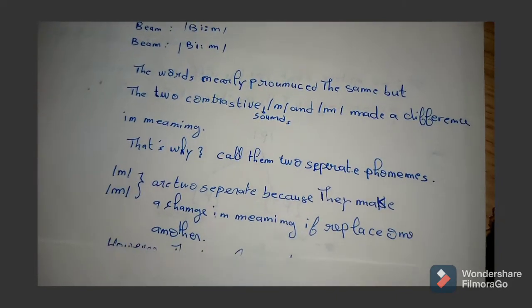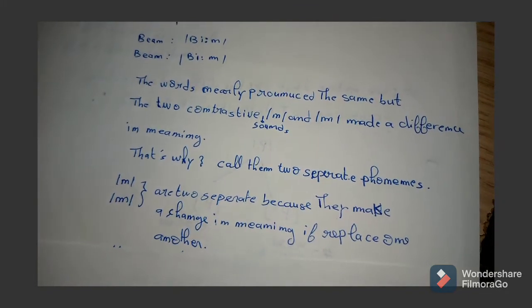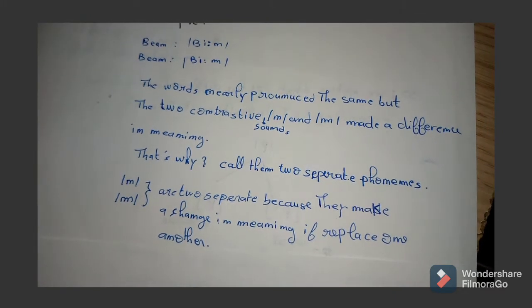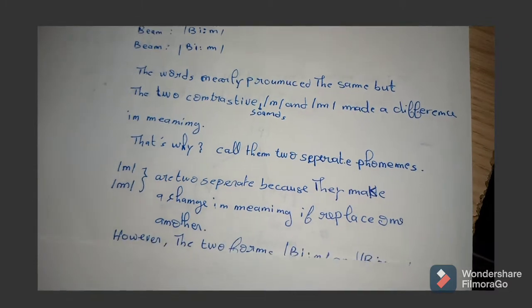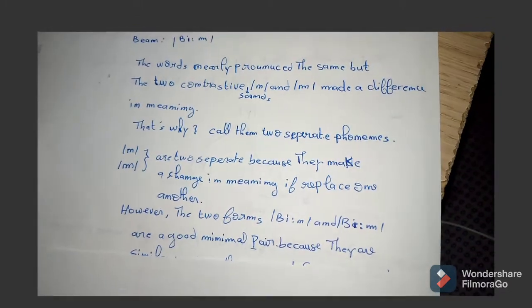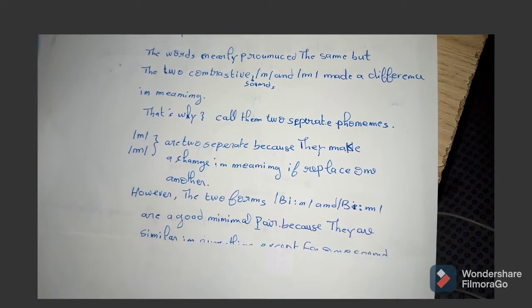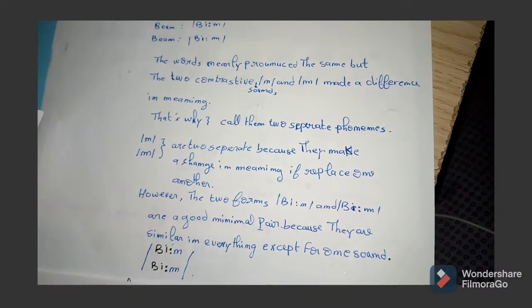But two contrastive sounds made a difference in the meaning. That's why we call the two sounds, the two contrastive sounds, two separate phonemes. N and M are two separate phonemes because they make a change in meaning. If we replace N with M, there will be a change in meaning, right? However, the two forms 'bean' and 'beam' are a good minimal pair because they are similar in everything except for one sound.